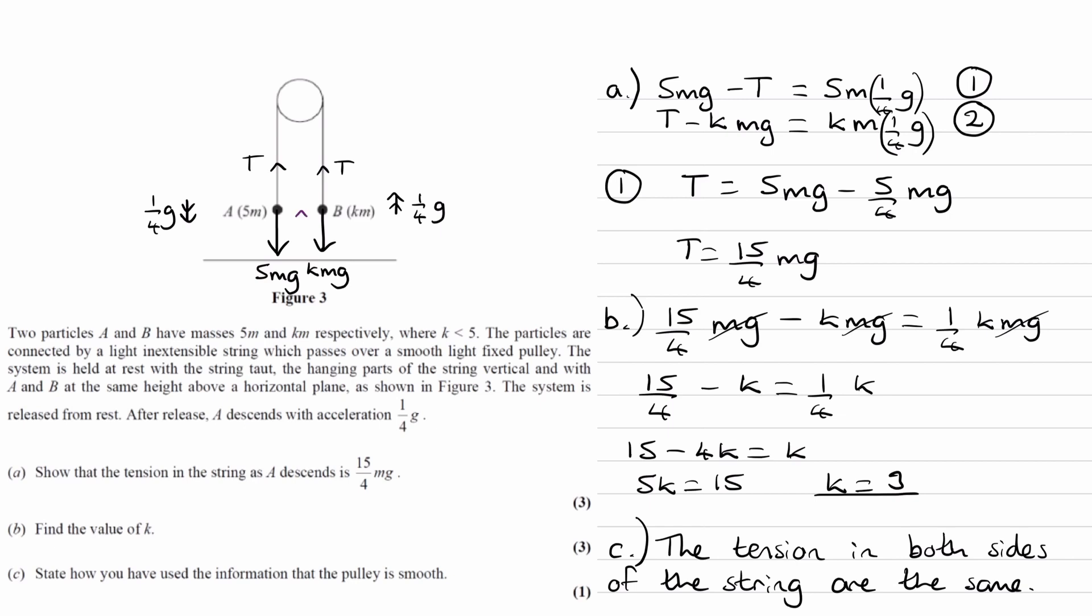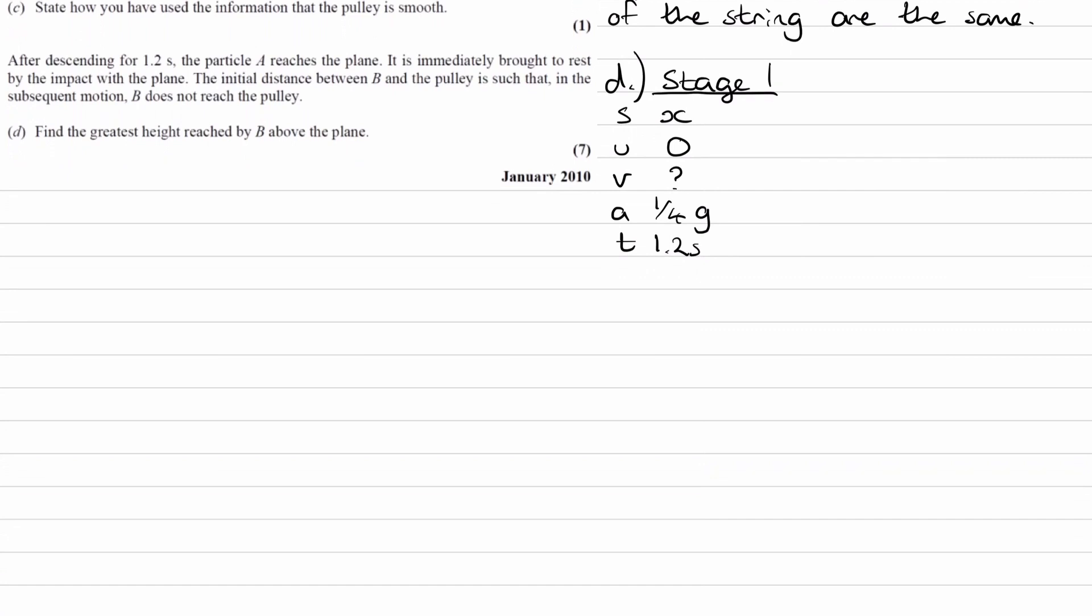So X would be this distance here. So A travels a distance of X downwards, hits the ground. And in that time, B will travel up by the exact same distance. So the exact same distance will be traveled by B upwards. So B will then end up here. And A will end up down there. And after stage one, B will be a total distance of 2X above the ground. Okay. So with the suvat quantities that we have, let's work out what S and V are. I'm going to start with V.